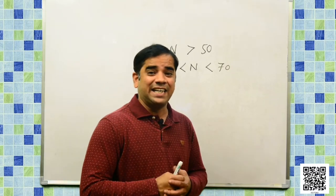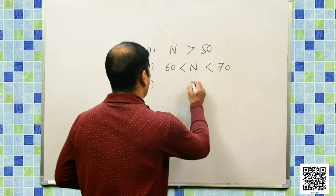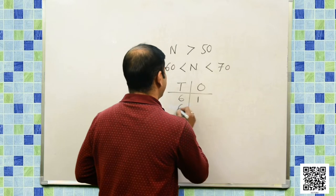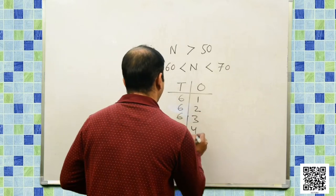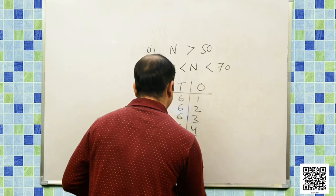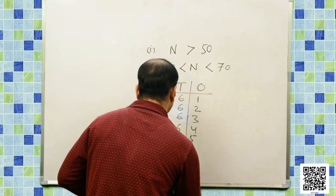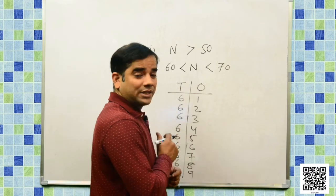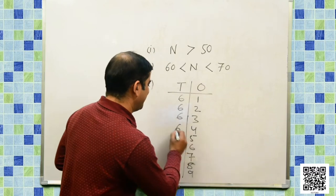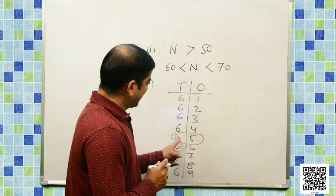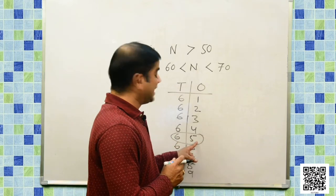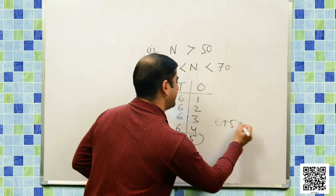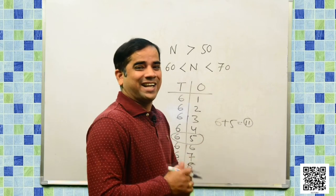Let us write down the numbers between 60 and 70: 61, 62, 63, 64, 65, 66, 67, 68, and 69. The clue says the tens digit is one more than the ones digit. It can be 65 — in this case the tens digit 6 is one more than the ones digit 5. Together, the digits have a sum of 11: 6 plus 5 equals 11. We have got the secret number — it is 65.